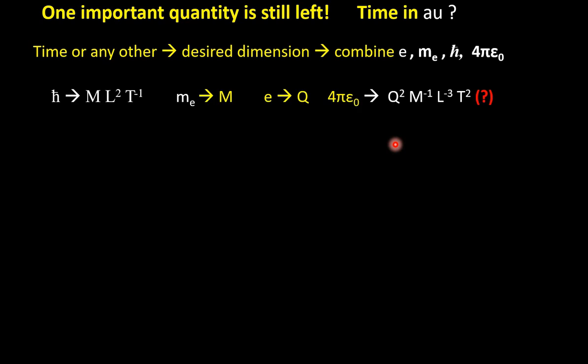Now one important quantity still left, time, time in atomic unit. What about time? So in fact time, not only time, but any other quantity of desired dimension, what we do usually to get the atomic unit, we combine these four quantities e, m_e, h bar and 4π epsilon 0, all are 1 in atomic unit. So we combine in such a way, taking the product of powers of these four quantities accordingly, so that I get the desired dimension of the quantity I am asking for.